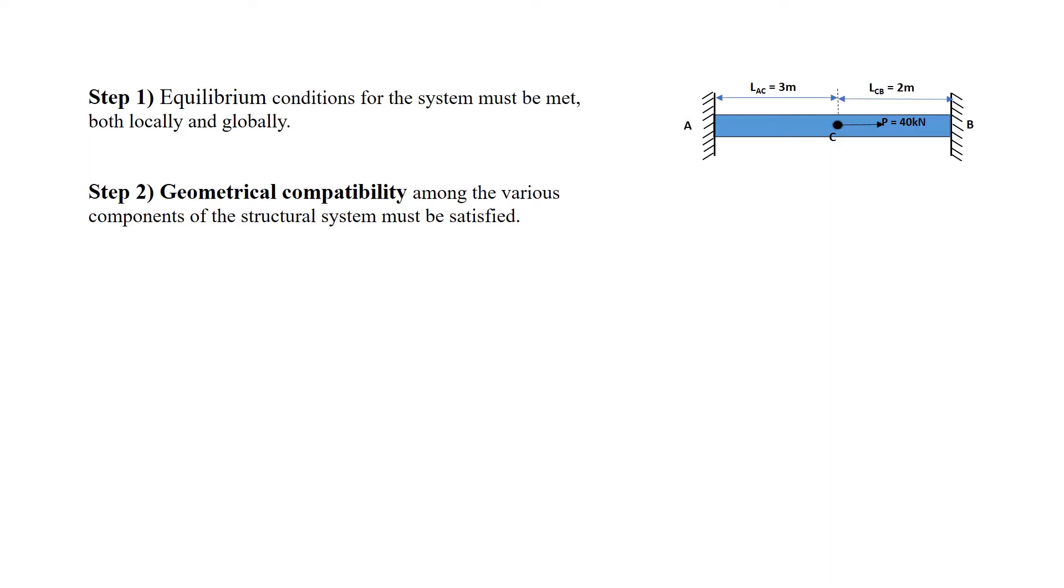Geometrical compatibility among the various components of the structural system must be satisfied. Basically, we must consider how points on the bar displace. Try to explain the compatibility conditions in terms of the displacements caused by loadings.